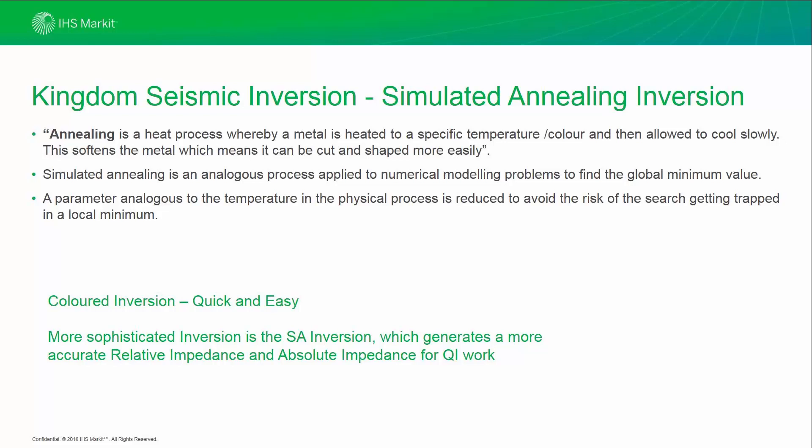Annealing is a heat process whereby metal is heated to a specific temperature and then allowed to cool slowly. This softens the metal, which means it can be cut and shaped more easily. Simulated annealing is an analogous process applied to numerical modelling problems to find the global minimum value. Imagine a 3D cube in front of you with mountains and river valleys. You could take a ball and throw it onto the top of a mountain, and it would roll down randomly into one of the valleys. What simulated annealing does is it gives this ball the ability to test each valley until it finds the absolute lowest point. A parameter analogous to the temperature in the physical process is reduced to avoid the risk of the search getting trapped in a local minimum.